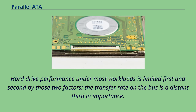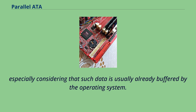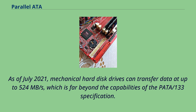Therefore, transfer speed limits above 66 MB per second really affect performance only when the hard drive can satisfy all I/O requests by reading from its internal cache, a very unusual situation, especially considering that such data is usually already buffered by the operating system. As of July 2021, mechanical hard disk drives can transfer data at up to 524 MB per second, which is far beyond the capabilities of the PATA/133 specification. High-performance solid-state drives can transfer data at up to 7,000 to 7,500 MB per second.